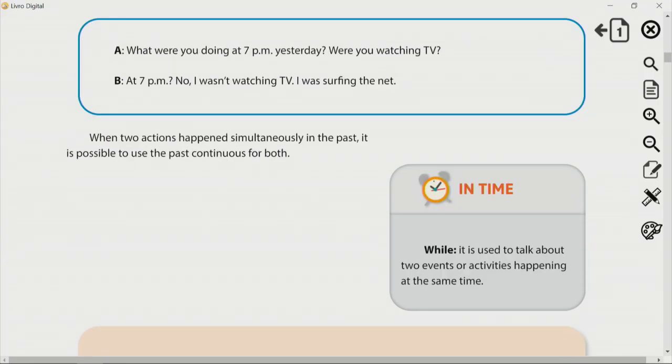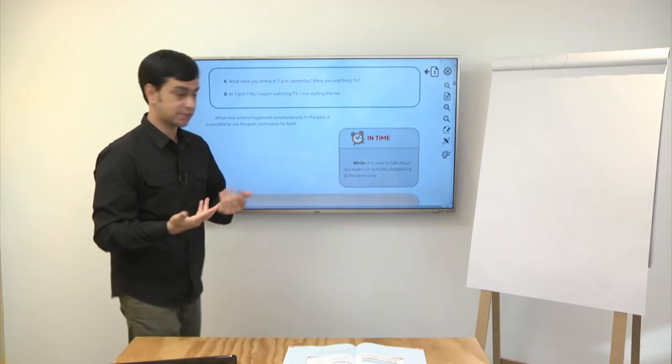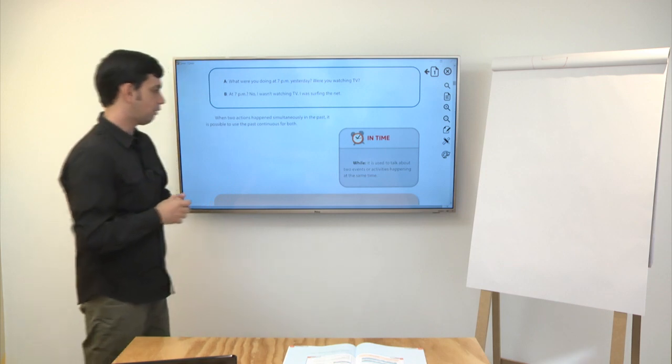Então, mais dois exemplos aqui. What were you doing yesterday at 7pm? Were you watching TV at 7pm? No, I wasn't watching TV. I was surfing the net. Quando duas ações acontecem simultaneamente no passado, é possível usar o past continuous pras duas. I wasn't watching TV. I was surfing the net. Então, duas ações que estavam acontecendo ao mesmo tempo. Ou que poderiam estar acontecendo ao mesmo tempo. Alright?